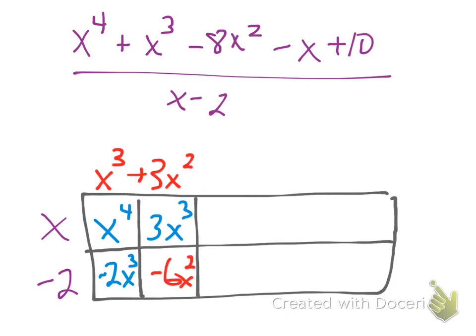And I continue the process. These next two here have to add up to be a negative 8x squared. So the top number then is going to have to be a negative 2x squared. So now they add up to that term.